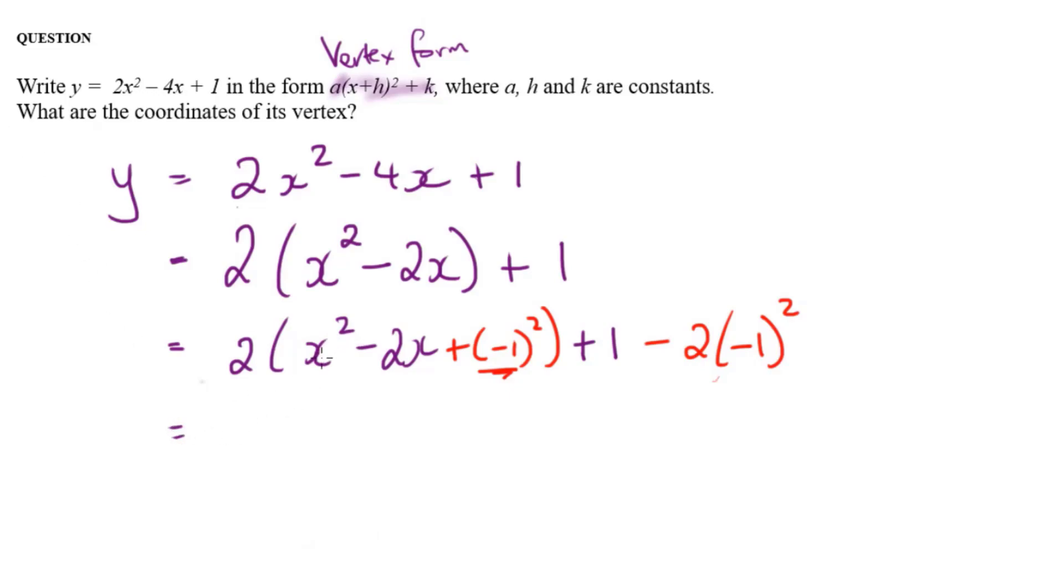that means x squared minus 2x plus minus 1 squared would give me a perfect square of x minus 1. And minus 2 minus 1 squared is 1 minus 2 times 1 is still minus 2. So that means in the completed square, it would be 2 times (x minus 1) squared plus 1 minus 2 is minus 1.